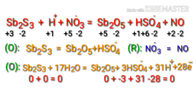Make the electron gain equivalent to the electron loss. The electrons gained in the oxidation half-reaction must be equal to the electrons lost in the reduction half-reaction.